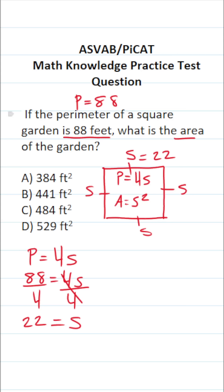Now we have to find the area of the garden, which is in the shape of a square. Area of a square is S squared. We now know that S is 22, so we can go ahead and plug that in for S.